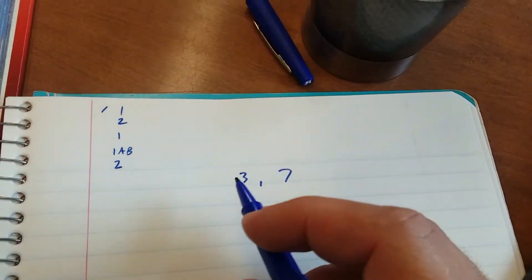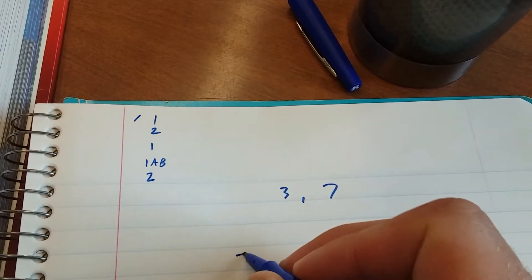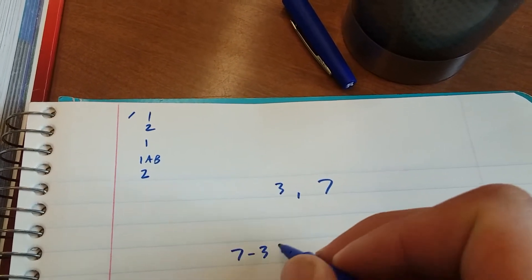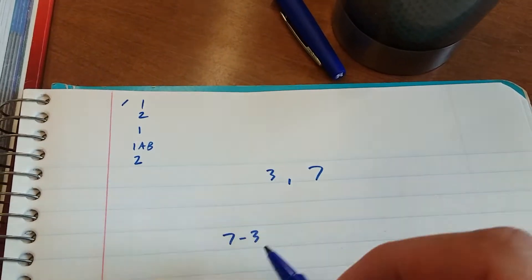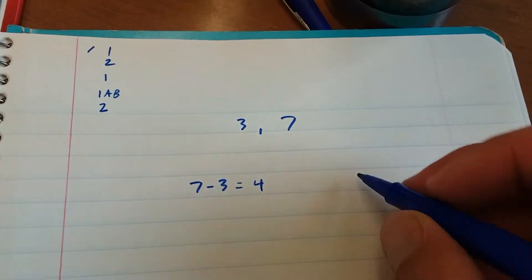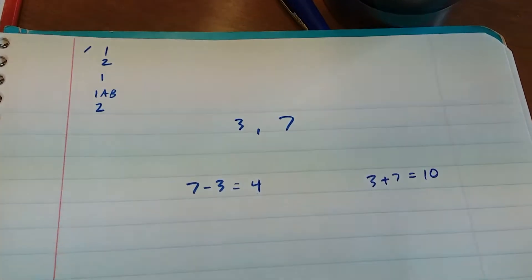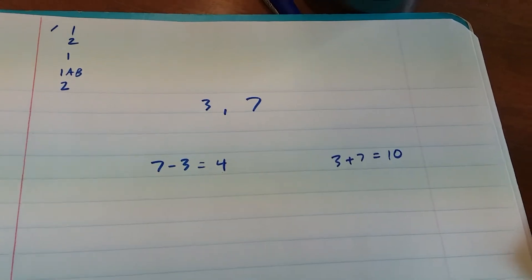So what that means is, for the triangle inequality, subtract those two numbers. Take your bigger minus your smaller, that's four, and then add those two numbers, three plus seven. That's going to give you the range of side lengths for your triangle.